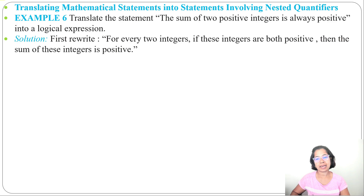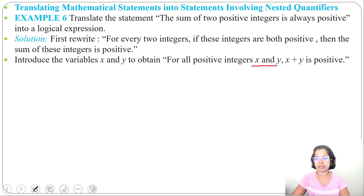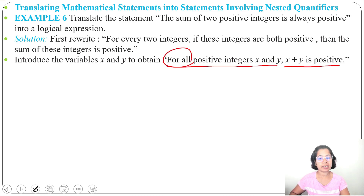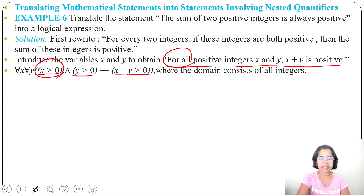For x and y positive integers, their sum is a positive integer. So we can write: for all positive integers x and y, x plus y is positive. Since it's 'for all', we use the universal quantifier: for all x, for all y, if x greater than 0 and y greater than 0, then x plus y greater than 0. Here, x greater than 0 means x is positive, and y is positive, so their sum is also positive.